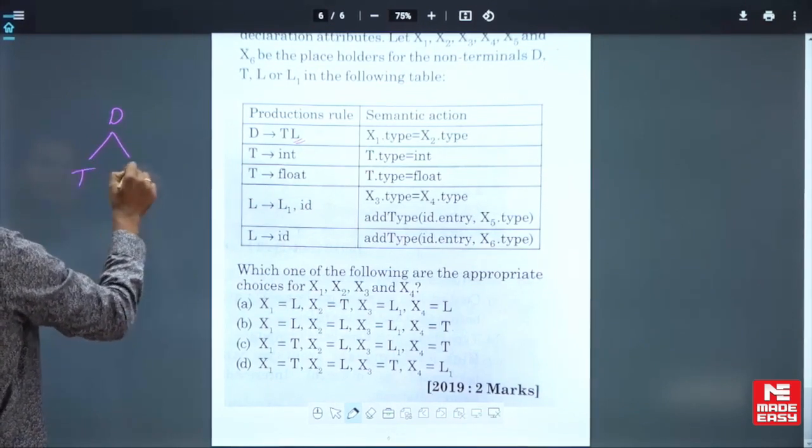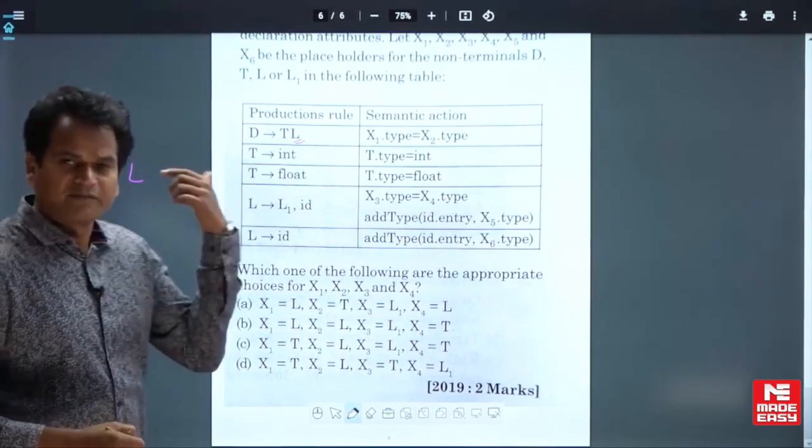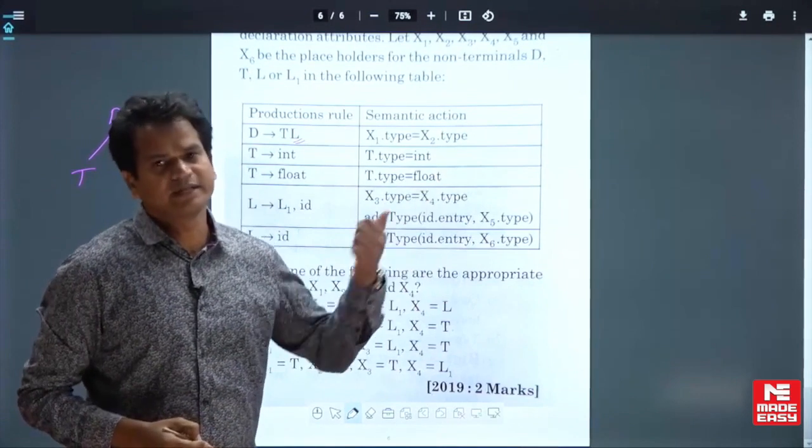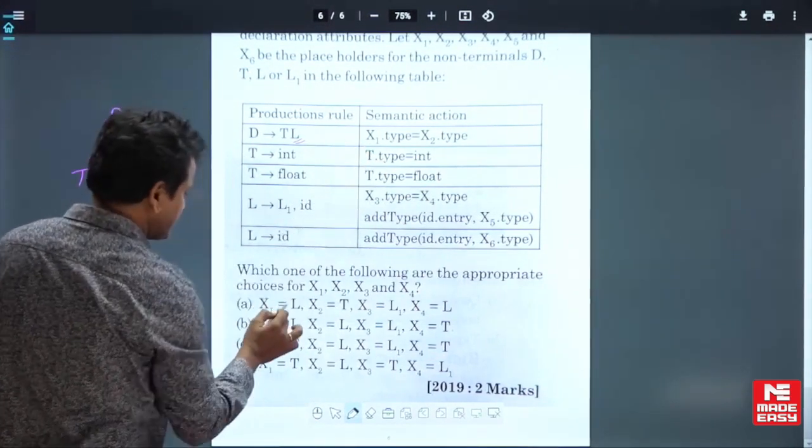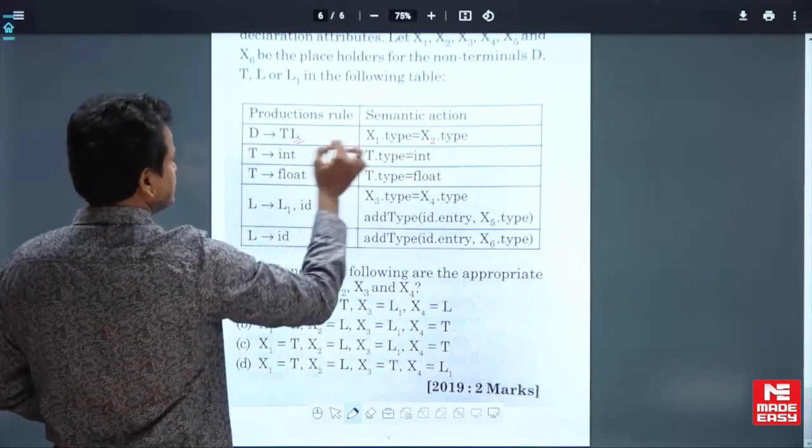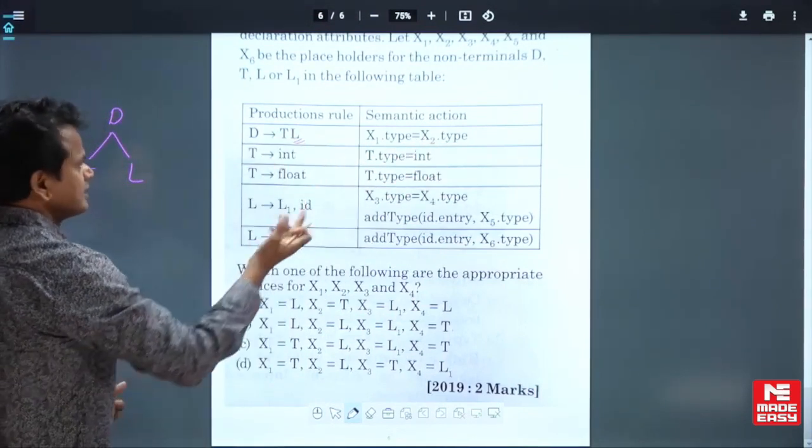we can find the child value from its siblings or from its parent. So x1 is given as L and x2 is given as T. It can be true, it can be true. Now go for x3.